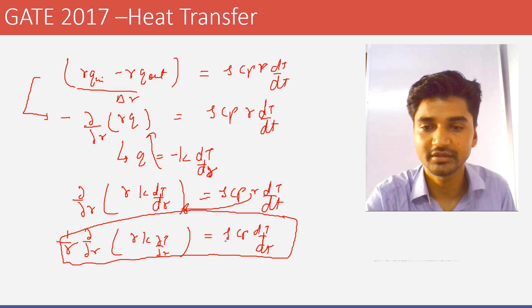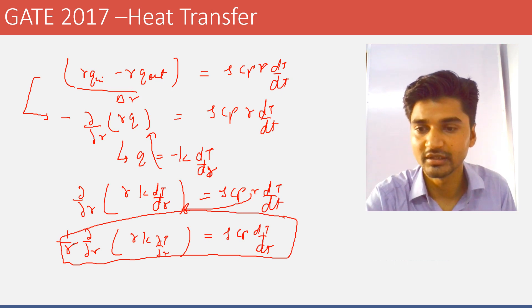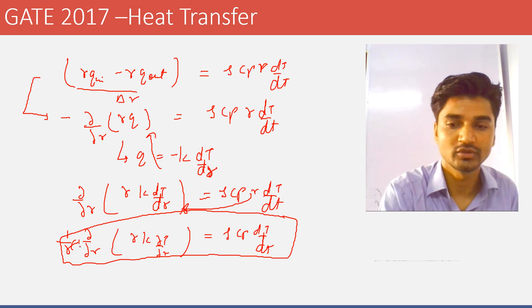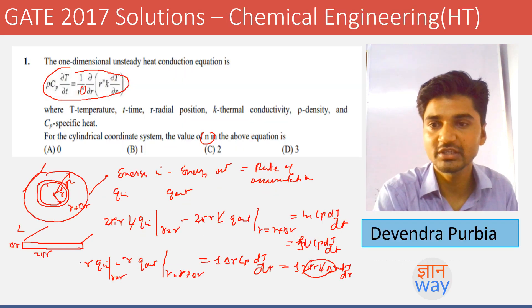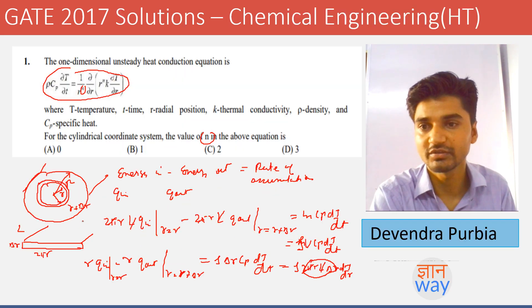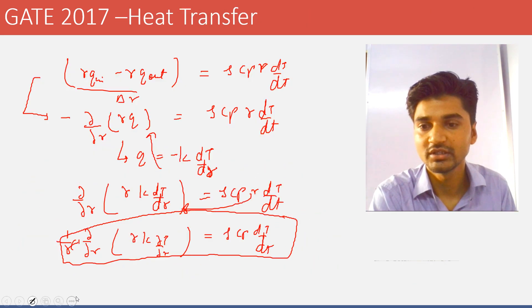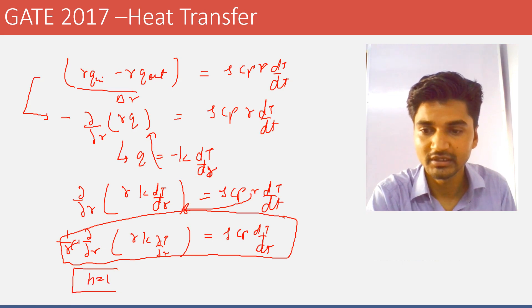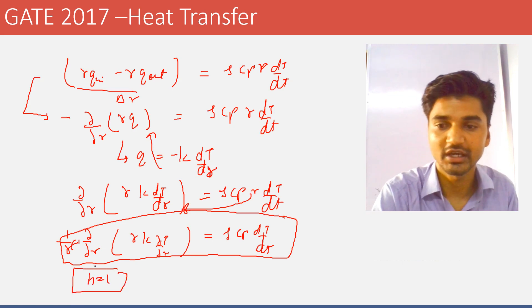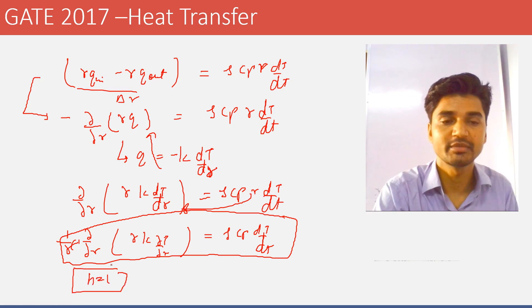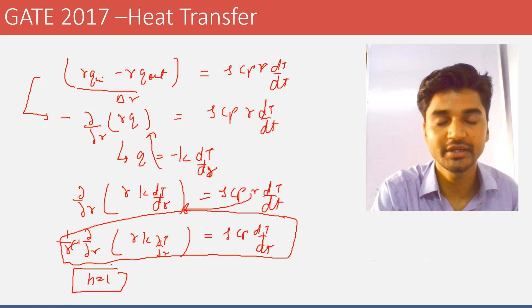Comparing the derived equation with the given equation, we can see the value of n should be 1. This corresponds to the one-dimensional unsteady-state heat conduction in cylindrical coordinates.